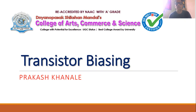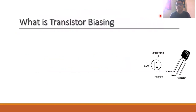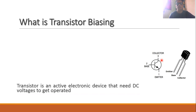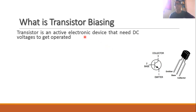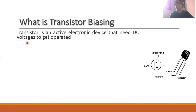We know that a transistor is a device which has three terminals. The first terminal is called the base of the transistor, another terminal is called the emitter, and the third terminal is called the collector. The transistor is an active electronic device. In electronics, some devices are passive, such as resistors and capacitors, and some devices are active. The transistor is an active device.